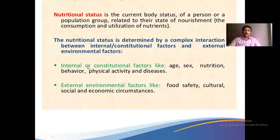There are internal and external factors affecting nutrition status. Internal factors include age, sex, nutrition, behavior, physical activity, and disease. External factors include how you handle and prepare food — food safety, culture, customs, behavior, religious beliefs, fasting, etc. These are the external factors of nutrition status.